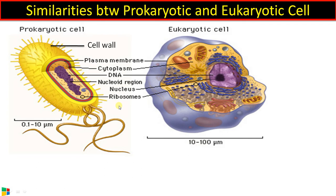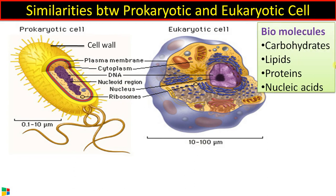Ribosomes are the protein-synthesizing machinery present in both prokaryotes and eukaryotes. Then the major biomolecules — carbohydrates, lipids, proteins, and nucleic acids — involved in metabolism are the same in all living cells.